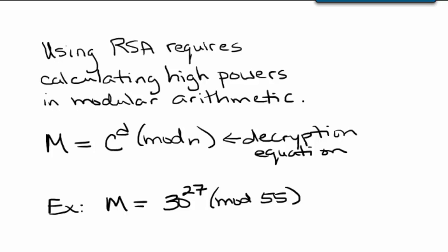Decrypting a message using RSA public key cryptography involves calculating high powers in modular arithmetic. The decryption equation is m is congruent to c to the d power modulus n.